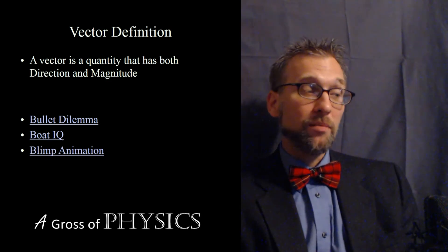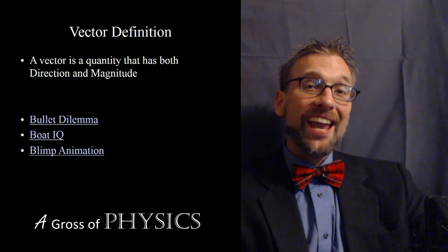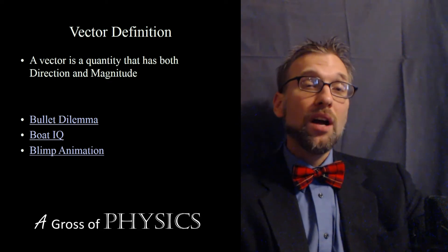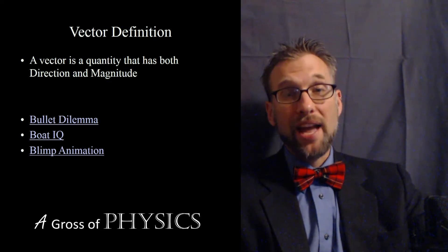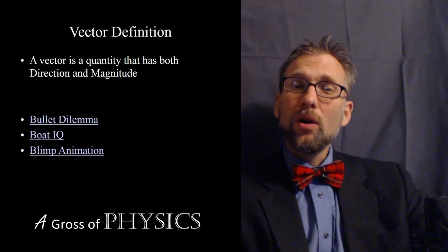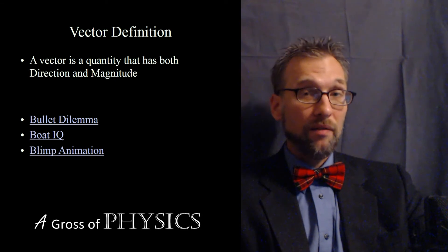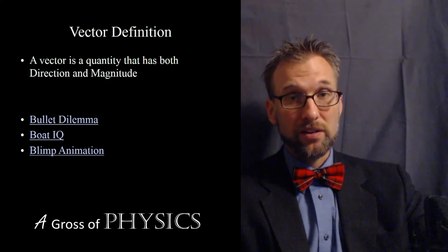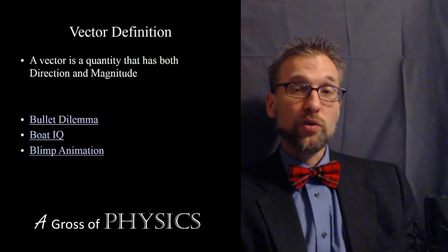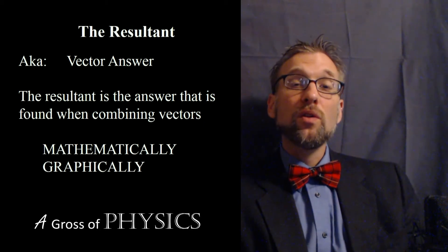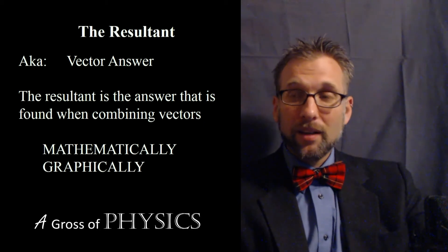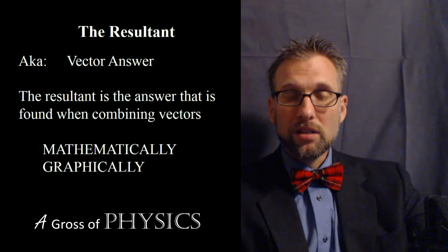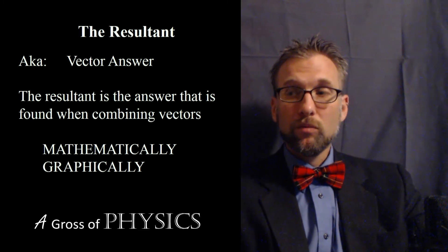When we find the answer to a vector problem, we have a fancy name for it: the resultant. The resultant is the combination of the x and y variables. We're going to talk about trigonometry a little bit in order to solve that, but for today my whole purpose is understanding the independence of vectors. As long as they're perpendicular, you can treat them separately and find the resultant. In addition, what's the fancy name for the answer? It's the sum.